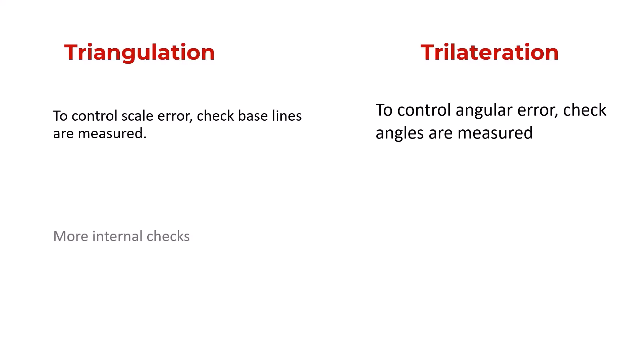In triangulation, the intervisibility between stations is very much essential. But in case of trilateration, it is possible to measure the distance without intervisibility.